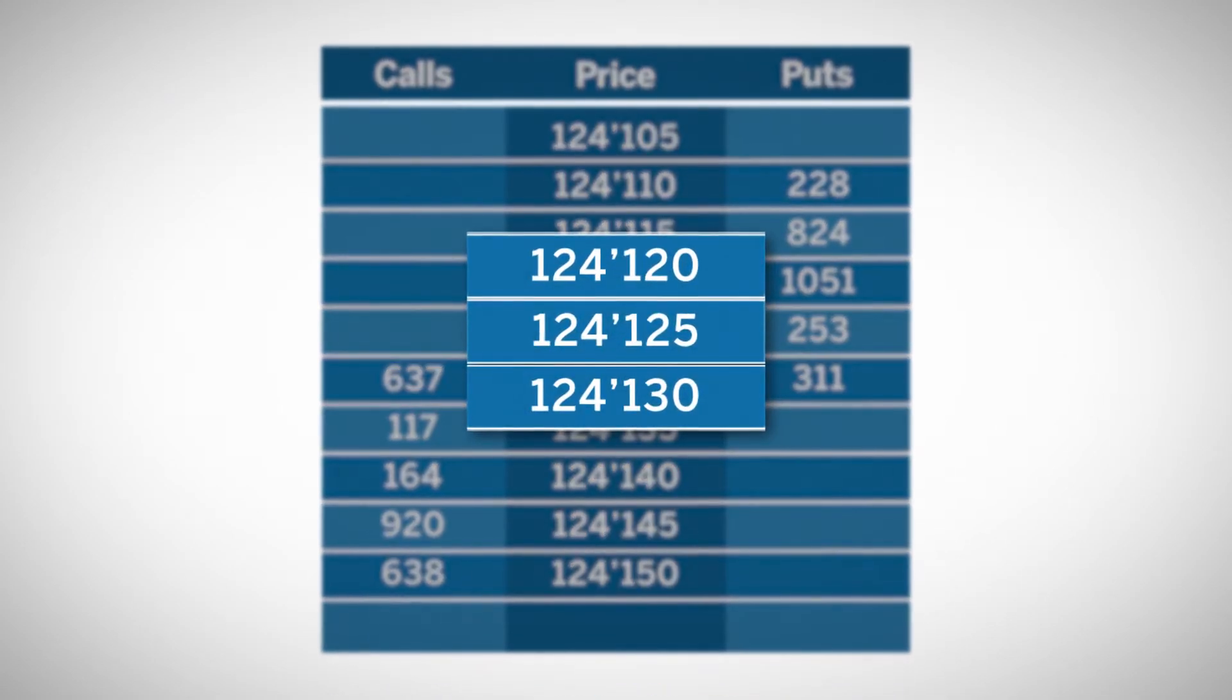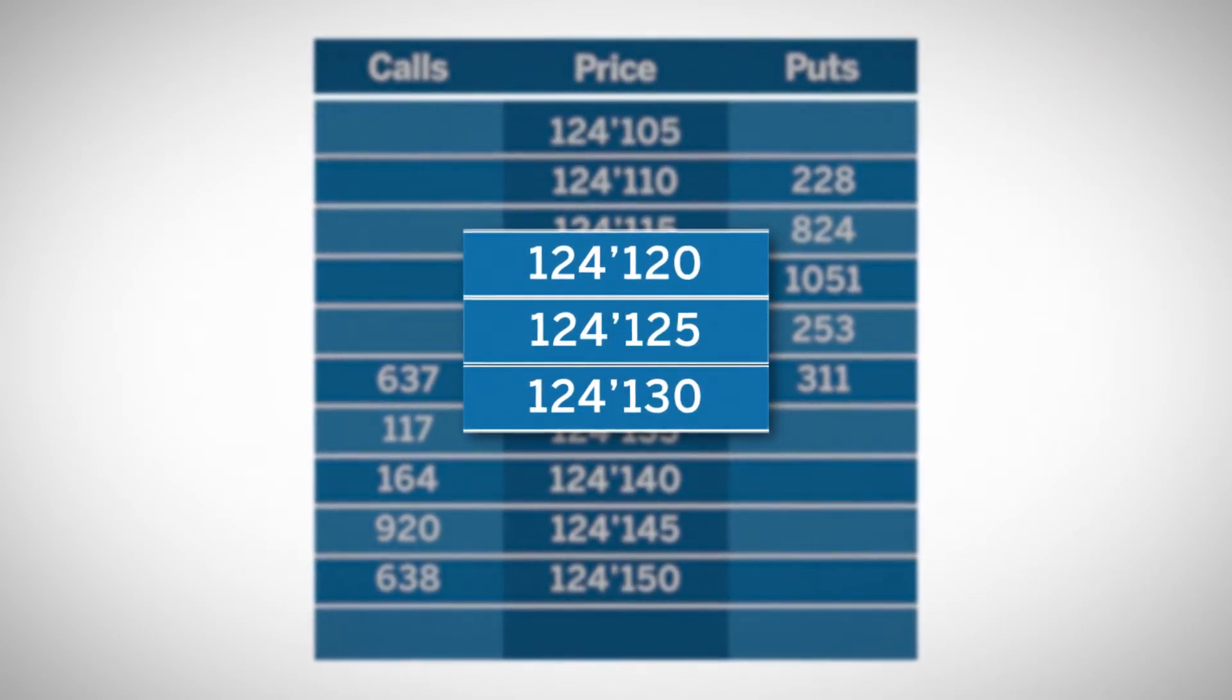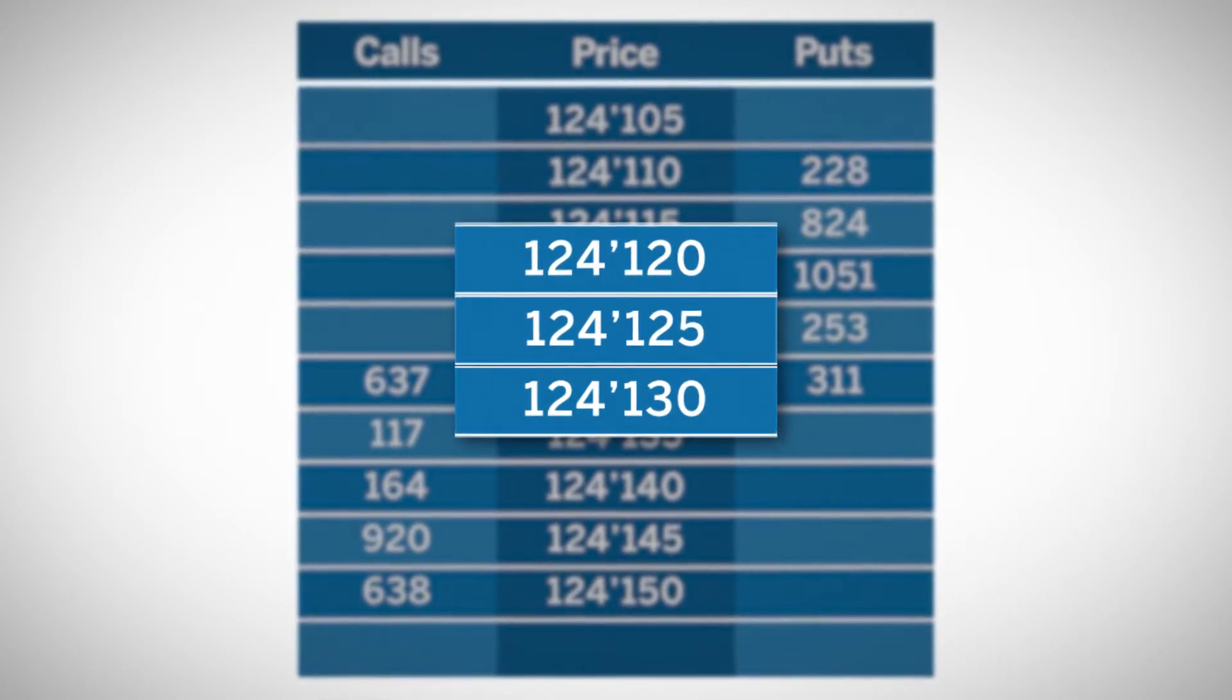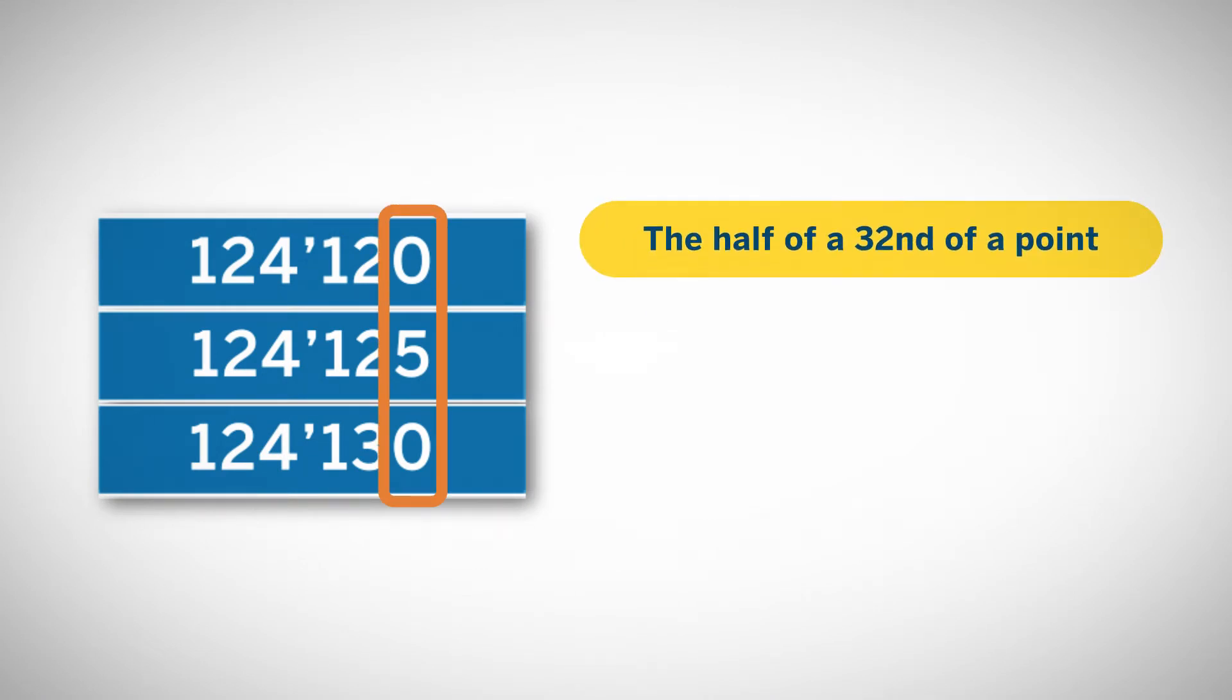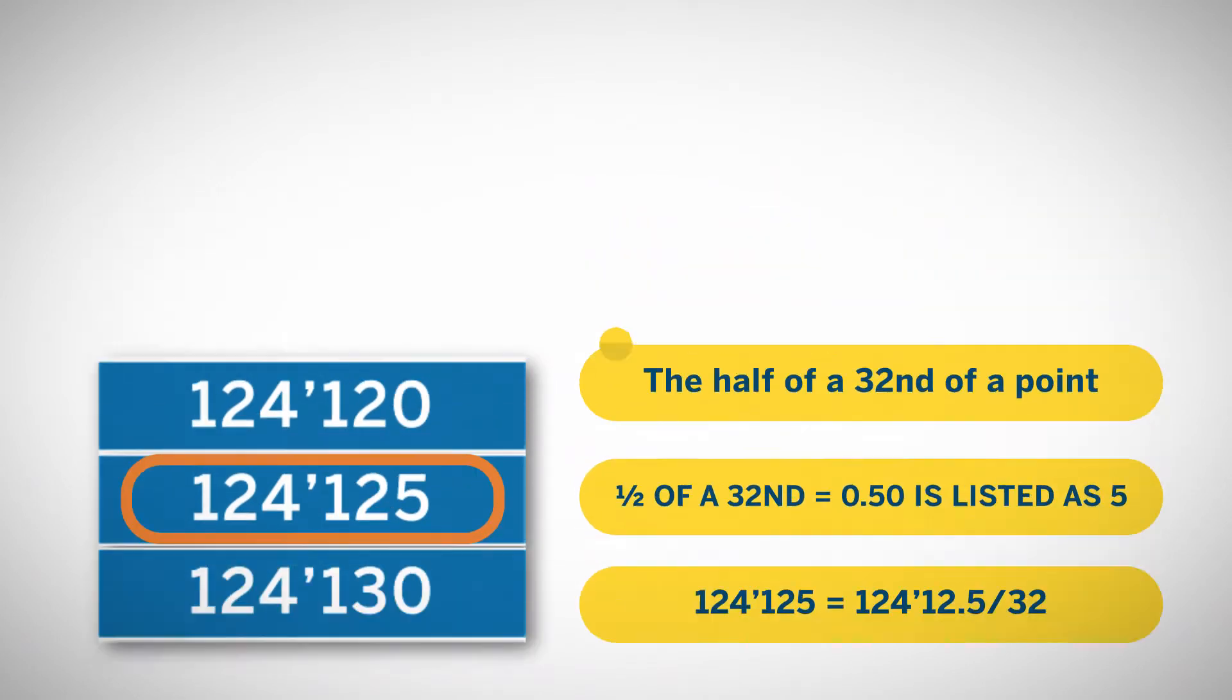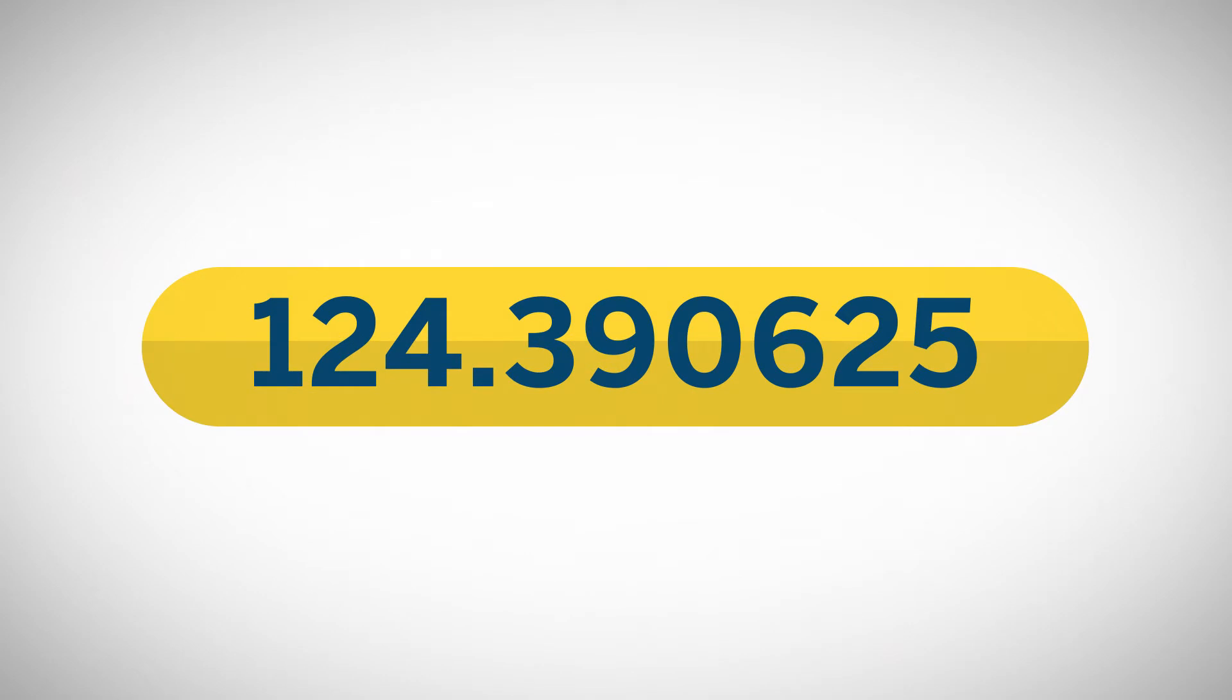The third digit after the apostrophe represents the half of a 32nd of a point. Half of a 32nd, which equals 0.50, is listed as 5. For example, 124-12.5/32 equals 124.390625 in decimal.